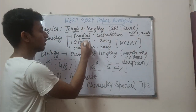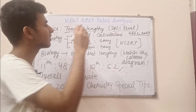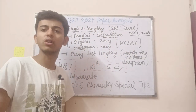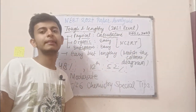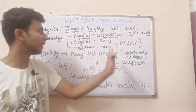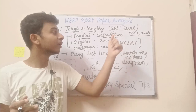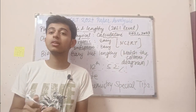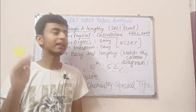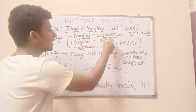Talking about chemistry — chemistry is divided into three parts: physical, organic, and inorganic. Physical was a little calculative — calculative in the sense that there were questions on activation energy, osmotic pressure, and stoichiometry. It was calculative but doable. In the past few years, physical chemistry used to be just one formula and your answer is there, but this year it was a little lengthy.